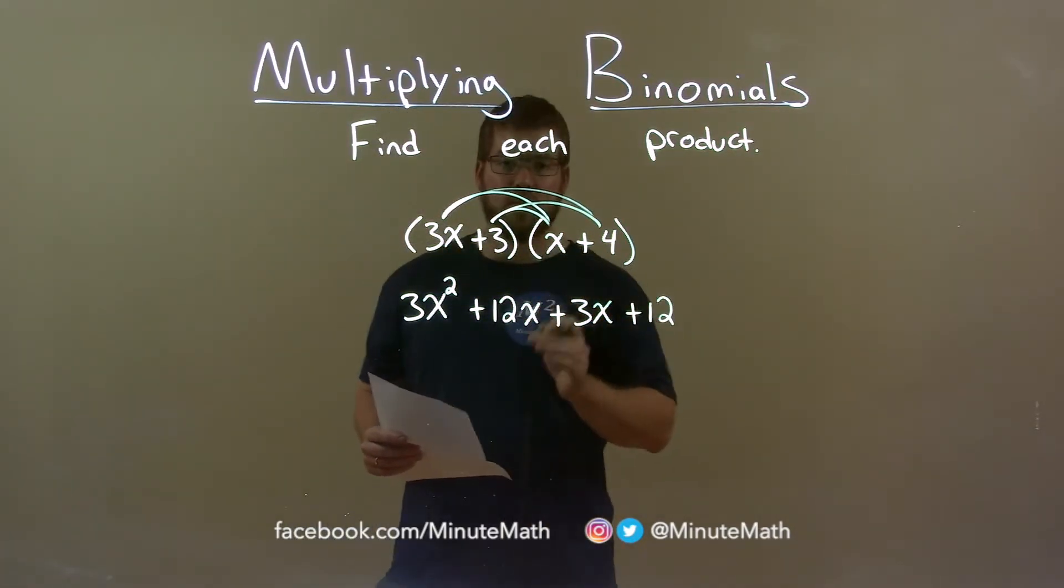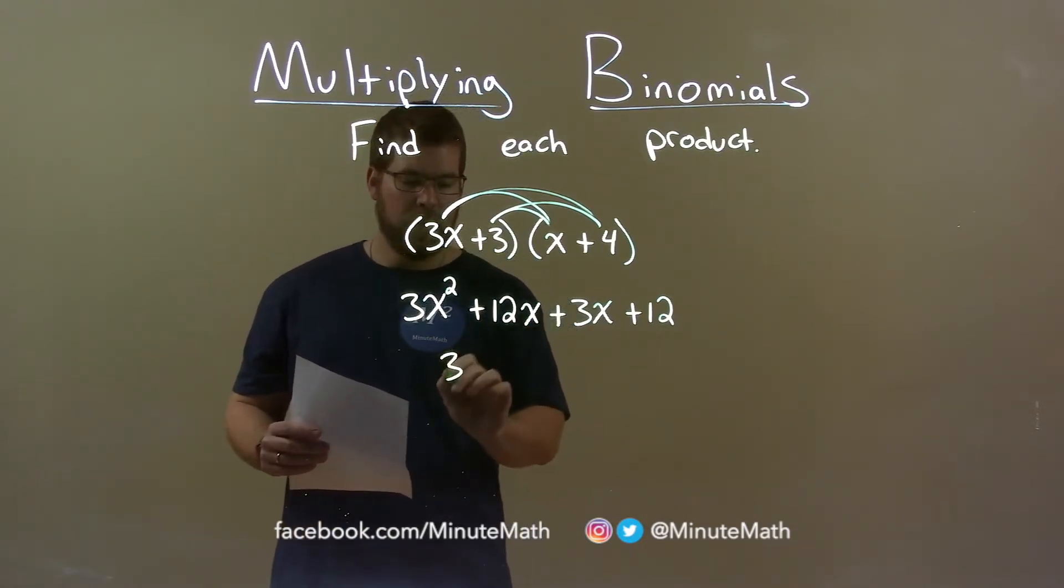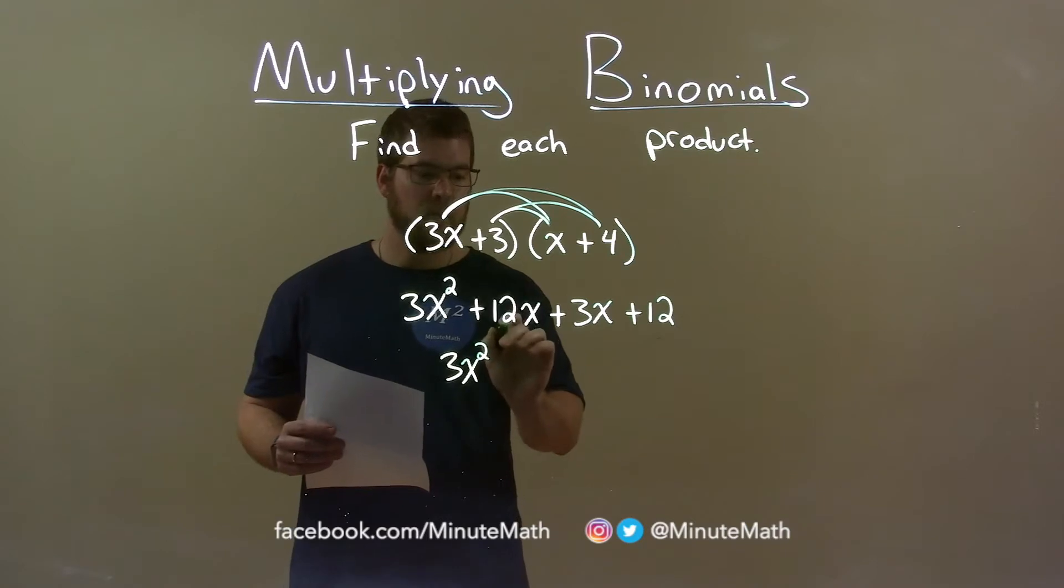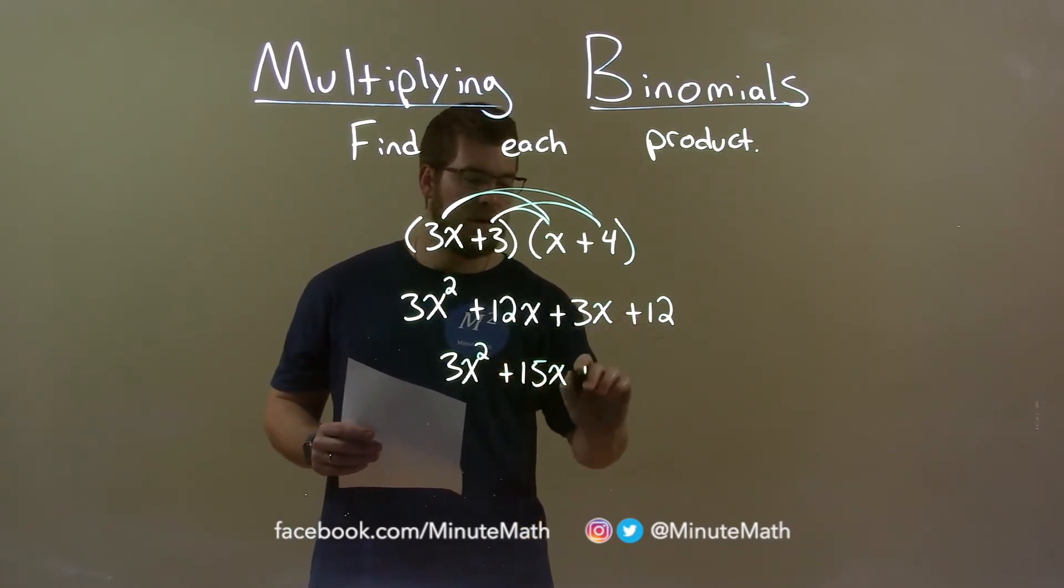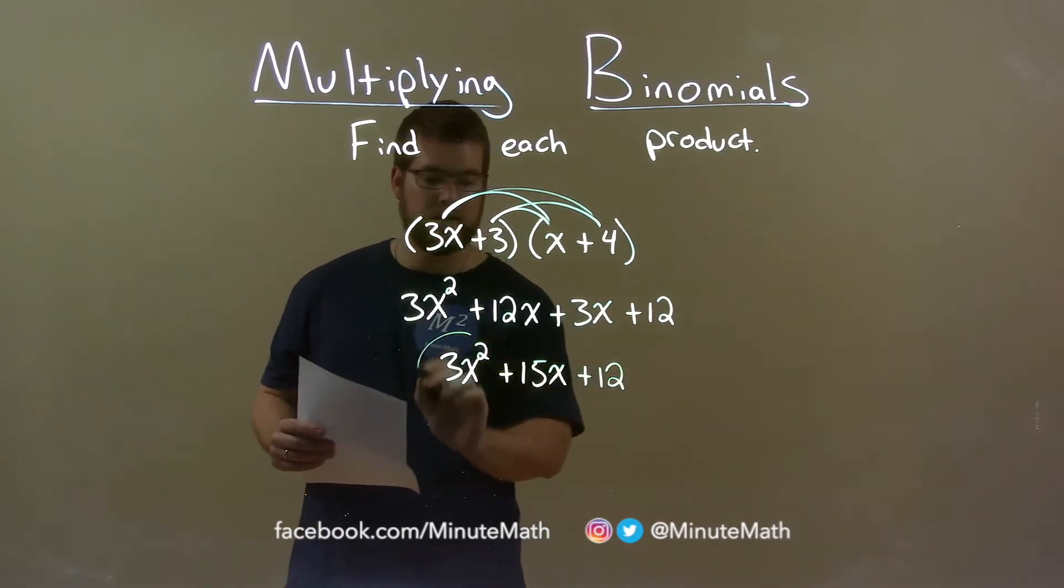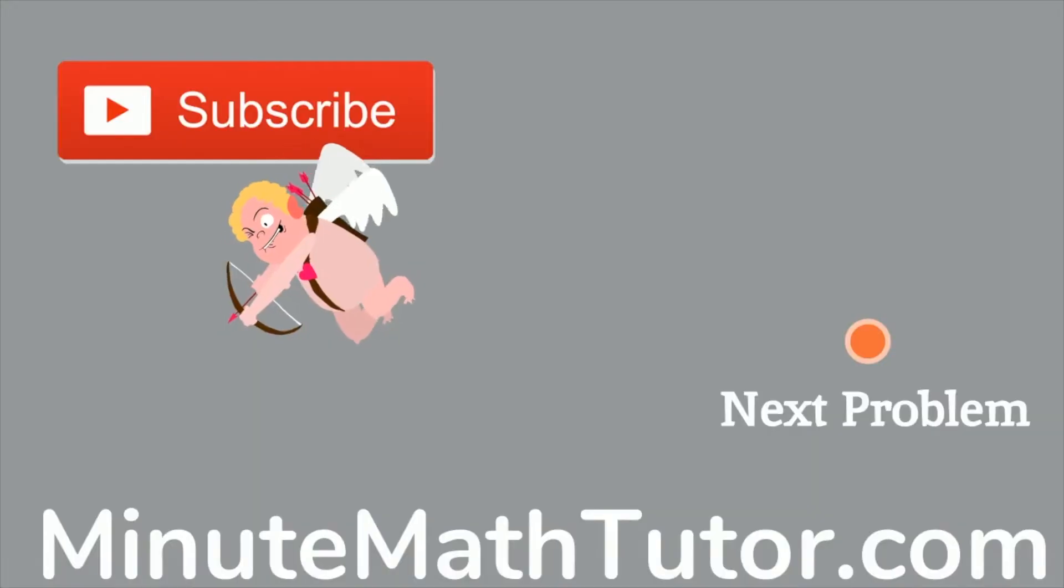So, now we want to combine our like terms, which is just the 12x and the 3x. 3x squared comes down, and 12x plus 3x is 15x. Bring down the 12, and our final answer, 3x squared plus 15x plus 12.